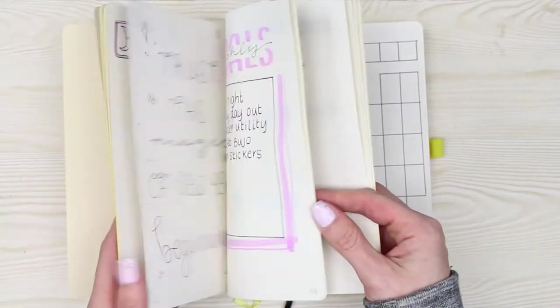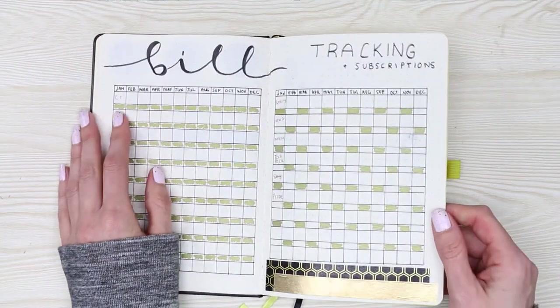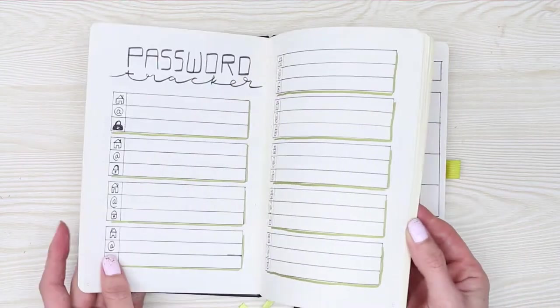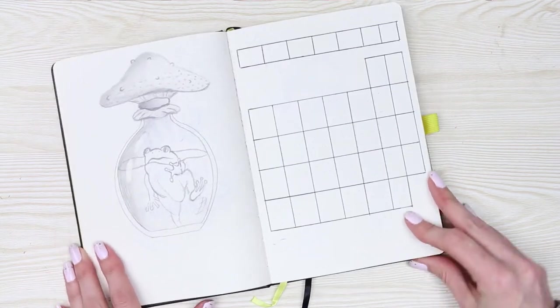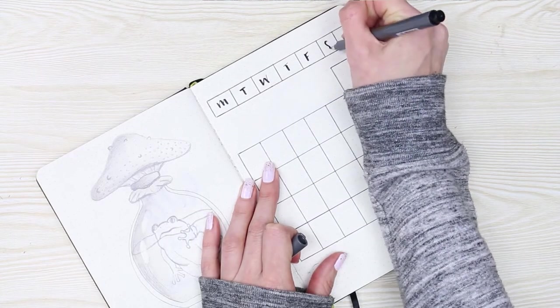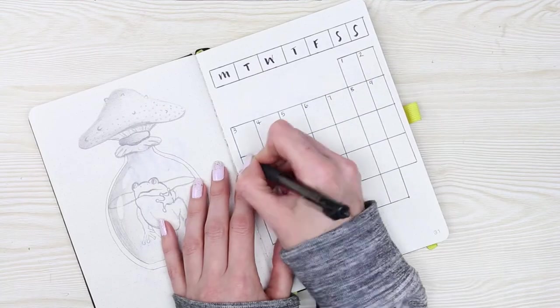I know it looks pretty small, but right at the beginning of my bullet journal I've got a bill tracker and my yearly calendar with all of the birthdays already written on there. So really, this is more just a month at a glance where I can just quickly jot things down or refer to it and see it that way.